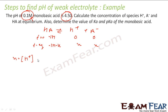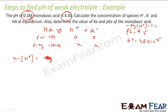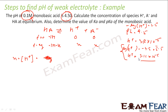x is the H⁺ ion concentration. Since pH is given as 4.5, we can find [H⁺]: pH = 4.5 = −log[H⁺], so log[H⁺] = −4.5, which is 5̄.5 in logarithm notation. Taking the antilog, [H⁺] = 3.16×10⁻⁵ M. Since [A⁻] = [H⁺], we also have [A⁻] = 3.16×10⁻⁵ M.